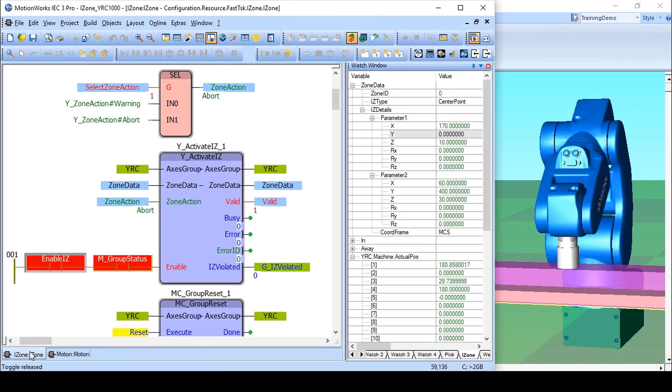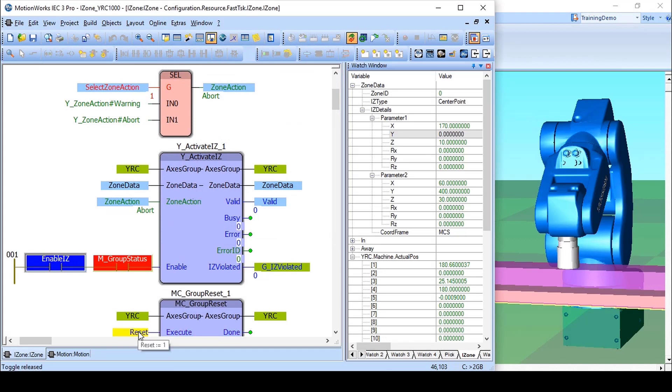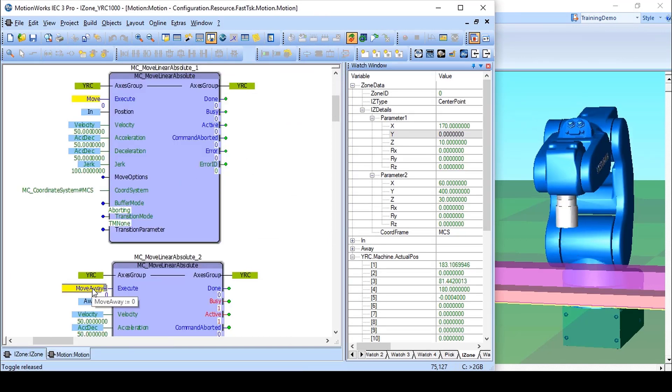When the interference zone violation results in aborted motion, disable the zone and execute group reset before attempting a recovery move.